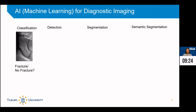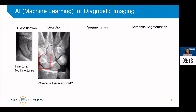Another task separate from classification is localization. This is when you want to determine the position of the classified object in an image. It combines classification and localization. Here we have an X-ray image of a wrist, and we want to find the scaphoid, which has been highlighted with a bounding box.